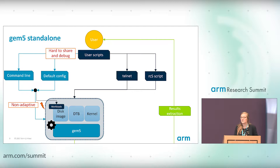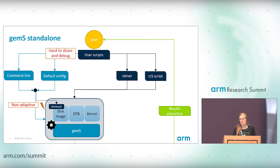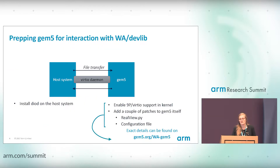If you run GEM5 standalone, as a user you need to configure it using a command line and the default configuration script. That combines into a set of choices that determine the architecture you're actually running — for example, how many cores you're running, how you're connecting them, and the level of detail. You can find the details on the GEM5 wiki.